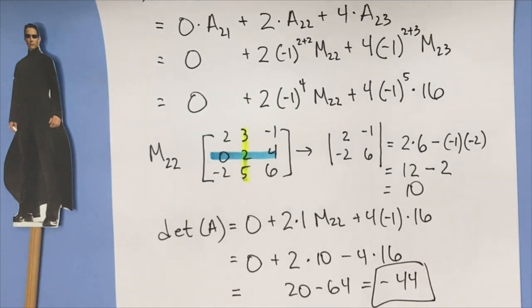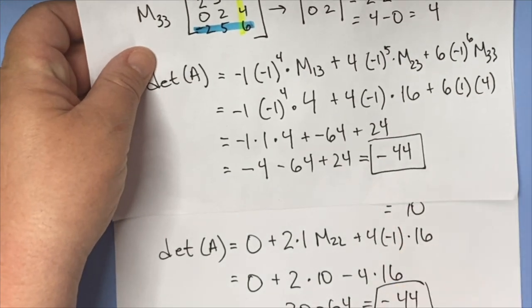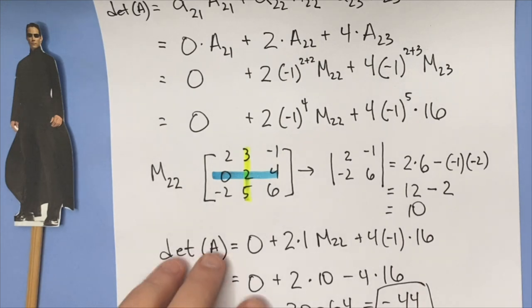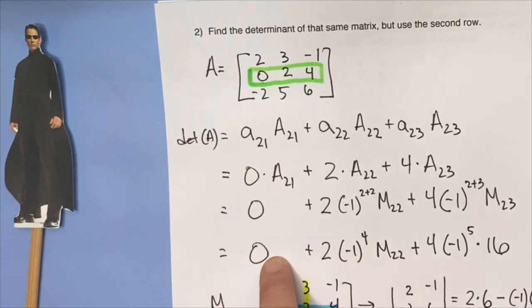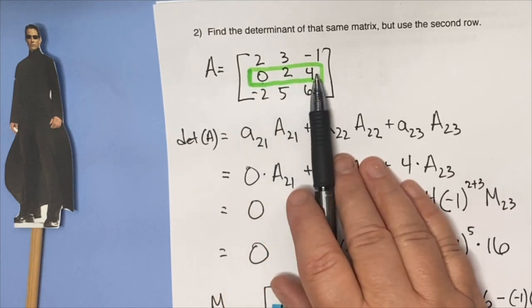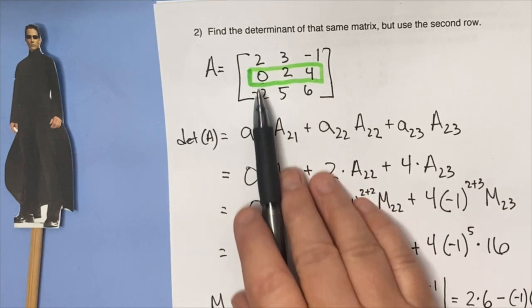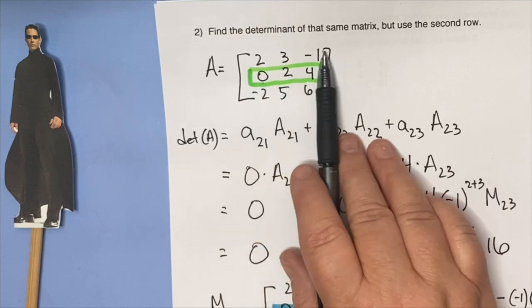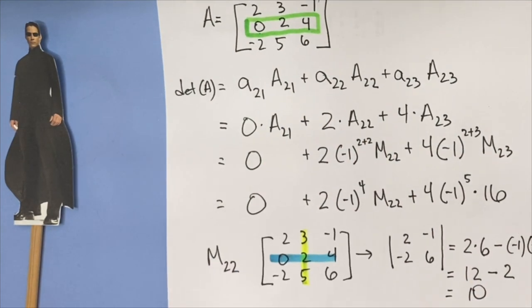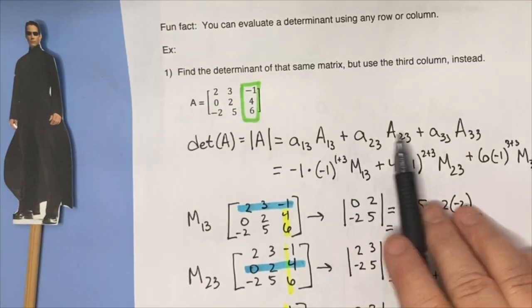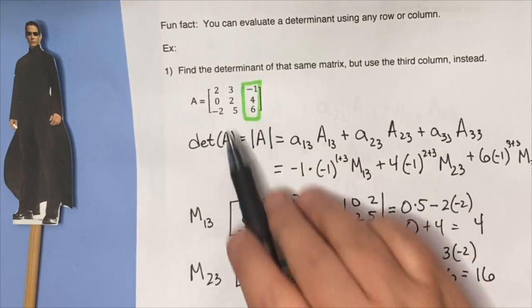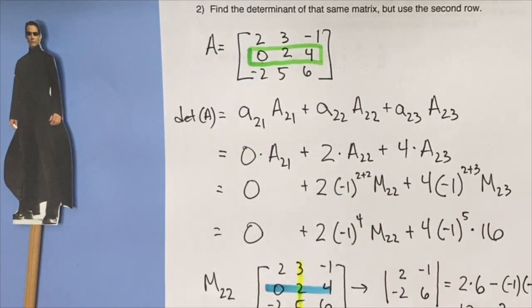So the determinant of A equals zero, plus 2 times 1 times 10, plus 4 times negative 1 times 16. That's 20 minus 64, which is negative 44. I get the same answer. Why was this nice? Since I capitalized on that zero, I didn't have to worry about the first cofactor at all. This works whether I use the second row or the first column — any row or column involving a zero saves time. And by reusing already-calculated cofactors, I avoid duplicating my effort.